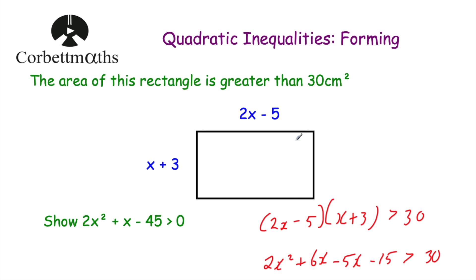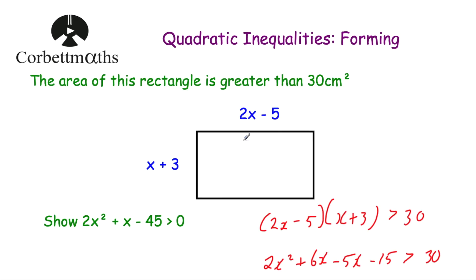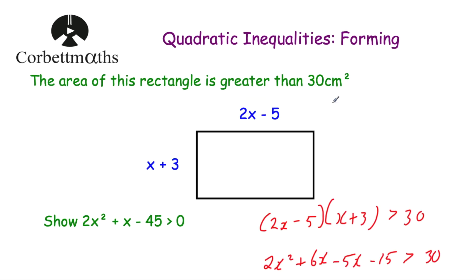In this video we've looked at how to form quadratic inequalities based on situations such as the area of a rectangle being greater than 30 centimetres squared, or a situation where two people think of a number. We've looked at how to form and solve those quadratic inequalities, and importantly how to go back to the context to adjust possible values of x — for instance, excluding negative values when x represents a length or a positive number. I really hope you found this video useful. If you did, please like it and subscribe to my YouTube channel. Thank you. Bye.